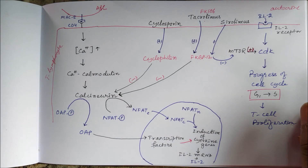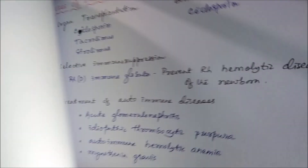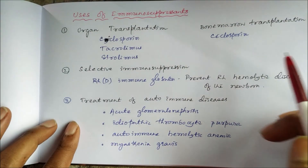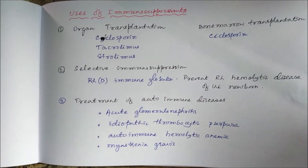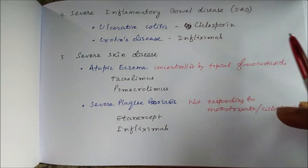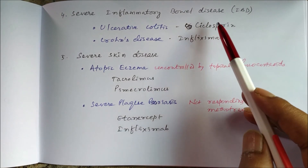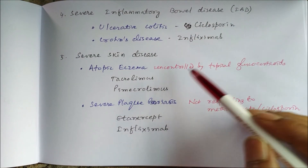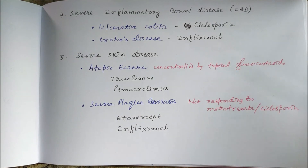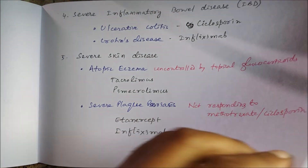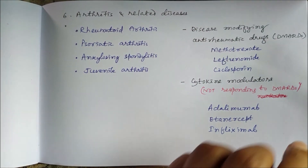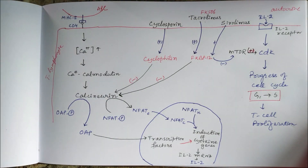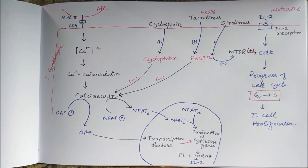All these drugs are used as immunosuppressants. They can be used in organ transplantation, bone marrow transplantation, autoimmune diseases, severe inflammatory bowel disease, severe skin diseases like atopic eczema and psoriasis, and arthritis and related disorders. This is all about the drugs cyclosporine, tacrolimus, and sirolimus. Thank you.